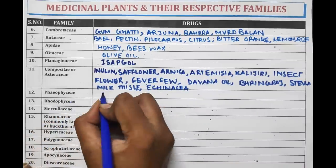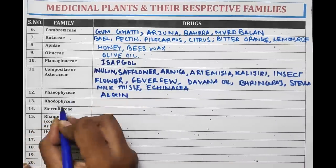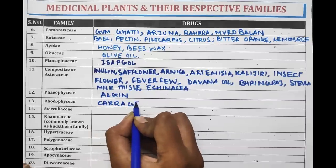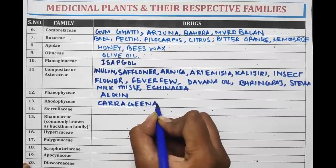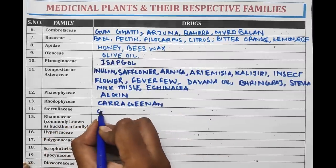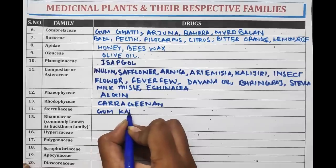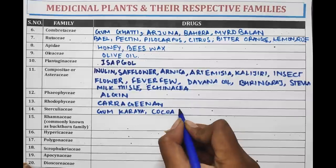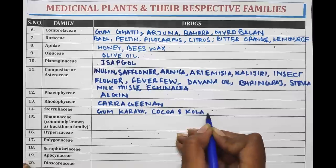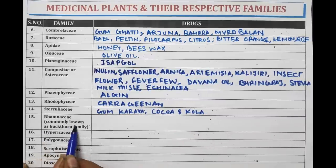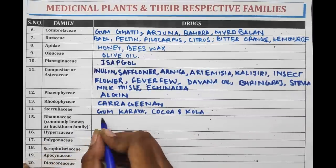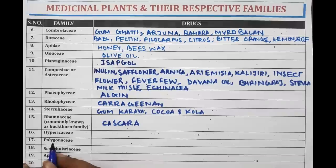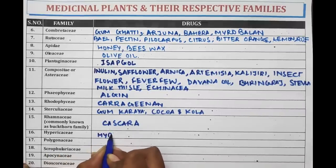Phaeophyceae contains Alginate. Rhodophyceae contains the drug Carrageenan. Sterculiaceae — Gum Karaya, Cocoa, and Cola are from family Sterculiaceae. Rhamnaceae, also known as the Buckthorn family, contains only the drug Cascara.